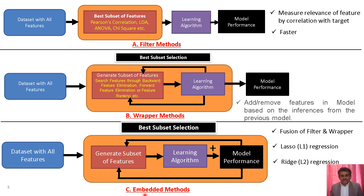The next method is the embedded method. In the embedded method, we start with all features, then generate a subset of features. Next, we apply the learning algorithm and the performance of the model is evaluated. If the performance of the model is not satisfactory, we again regenerate a subset of features, and this process continues in an iterative fashion.